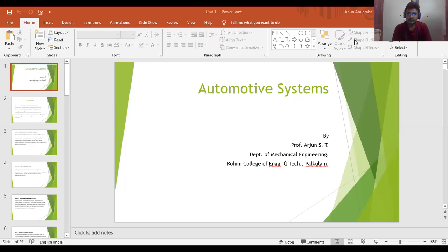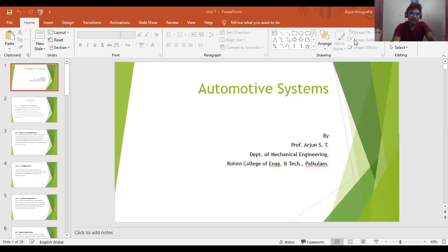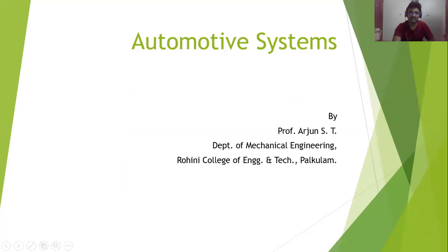From the next class I hope we can have a good session. Automotive Systems is completely related to automobile. We will be studying about the engine stages, frames, types of engines, types of automobiles, and everything. It has five units. In brief, we can see the syllabus now — I have prepared a presentation for you.